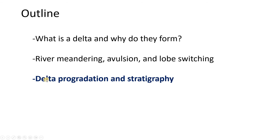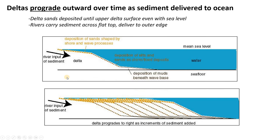Let's talk about delta progradation and stratigraphy, looking at deltas in cross-section rather than map view. Rivers deliver sediment from the left into the ocean. Sediment piles up where the river meets the ocean, and over time more and more sediment arrives, needing to be pushed further out. This happens by delta progradation — it deposits one bed, then another, then another, builds its own platform, and that platform marches out into the ocean.